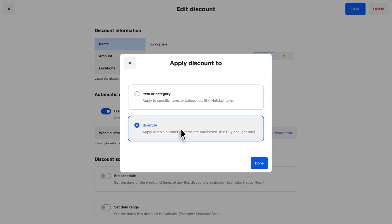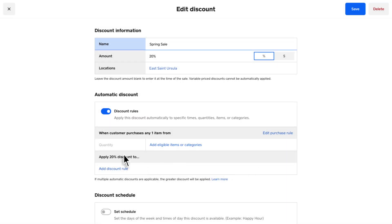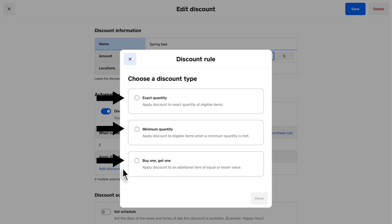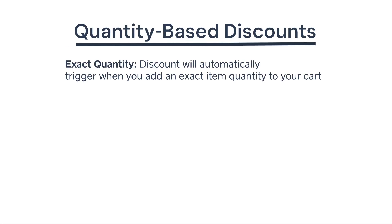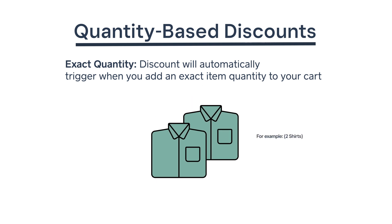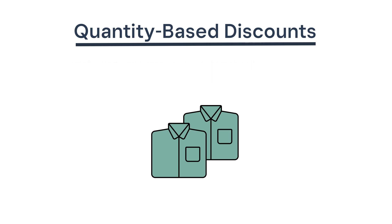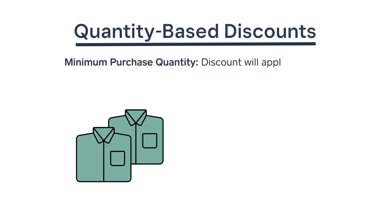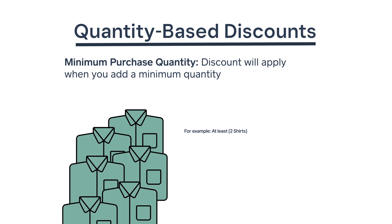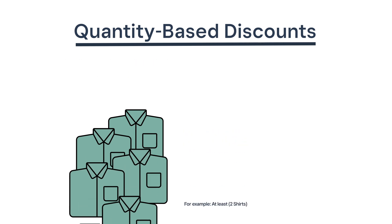Create a discount that will automatically apply when you add items or categories and a specified quantity to a sale. You can set up three types of quantity discounts. Exact quantity: when you add an exact item quantity to your cart, the discount will automatically trigger and apply to the item cost. Minimum purchase quantity: when you add a minimum quantity of an item to your cart, a discount will apply to all of the specified items.